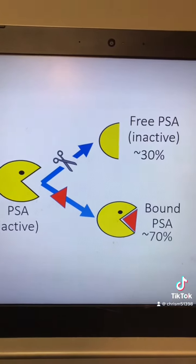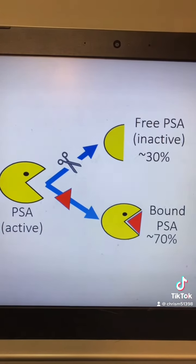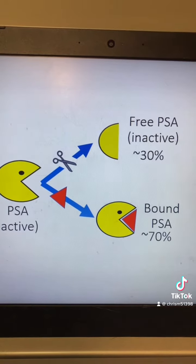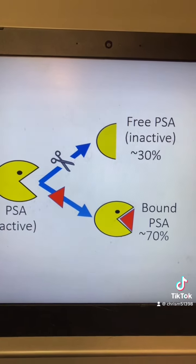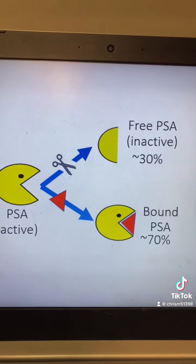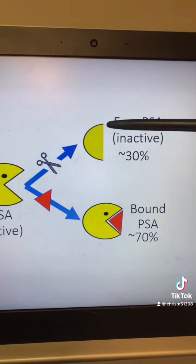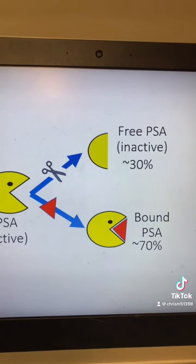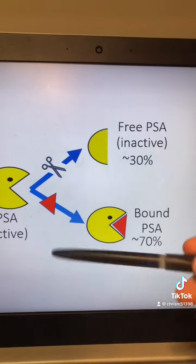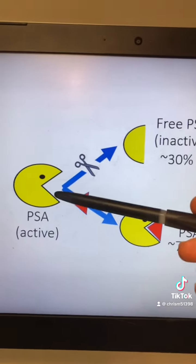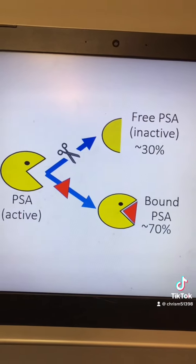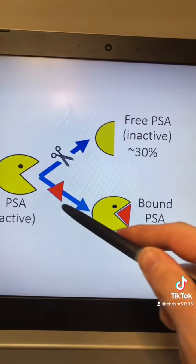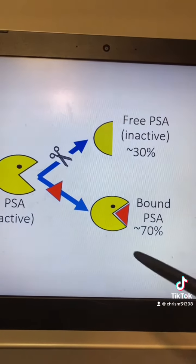Now before leaking into the blood, PSA sometimes undergoes proteolytic processing in the prostate, meaning that it is cut up in such a way that it is no longer active and can't degrade proteins by itself. That's kind of why I cut off Pac-Man's mouth over here. In other cases, active PSA might actually leak directly into the blood.